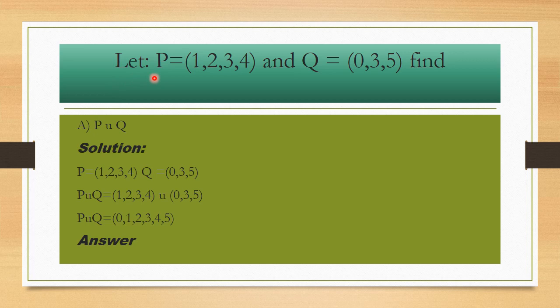Question number 1: Let P = {1,2,3,4} and Q = {0,3,5}. Find P union Q.